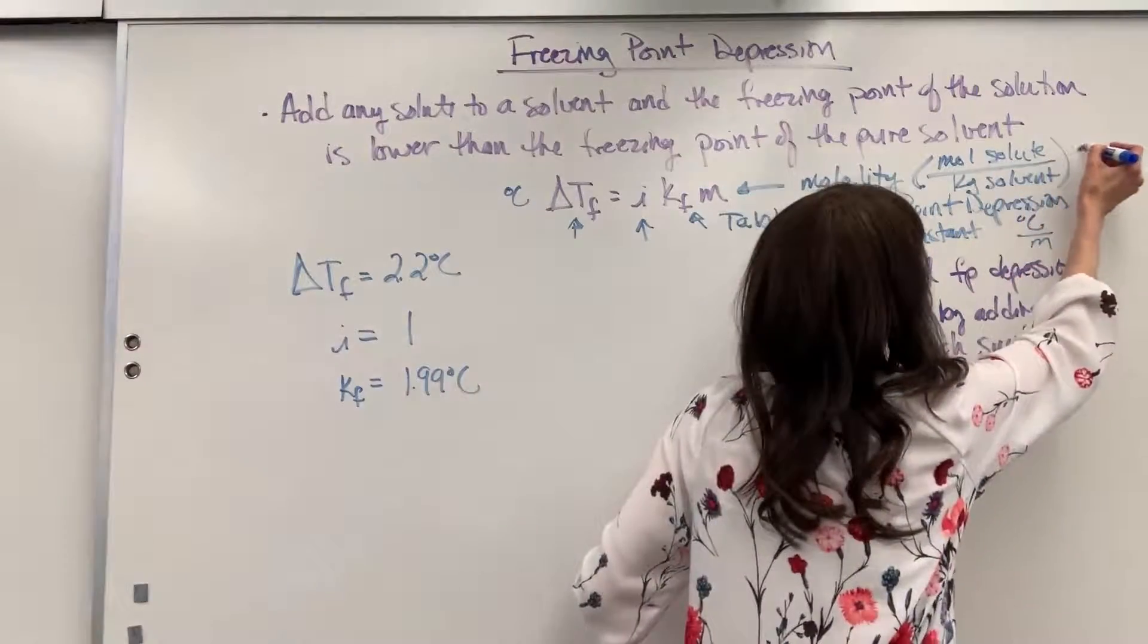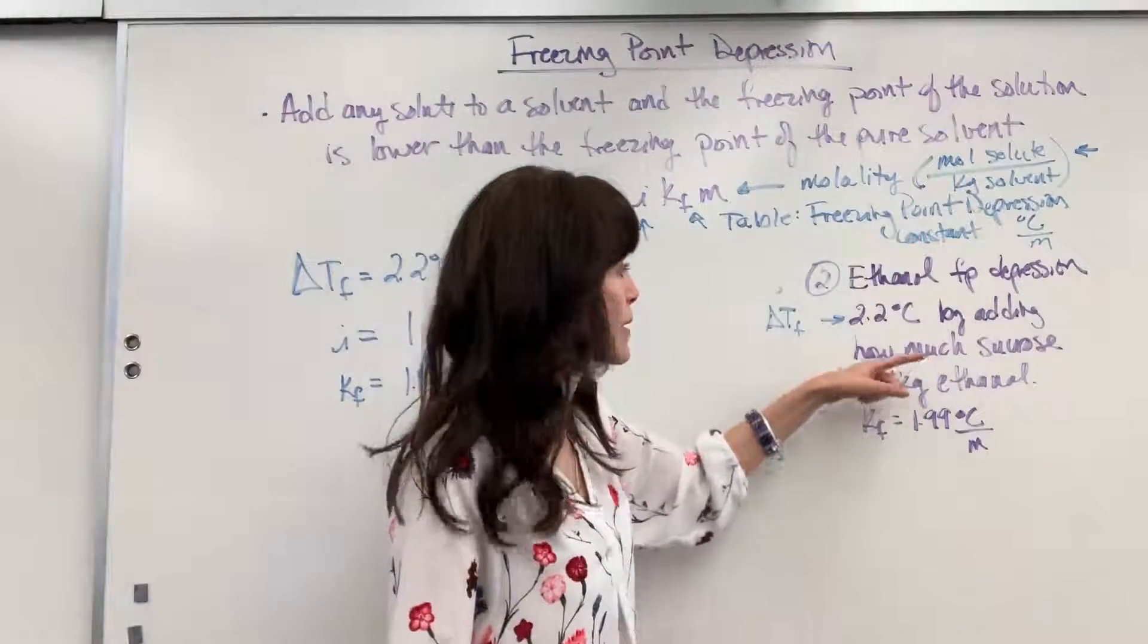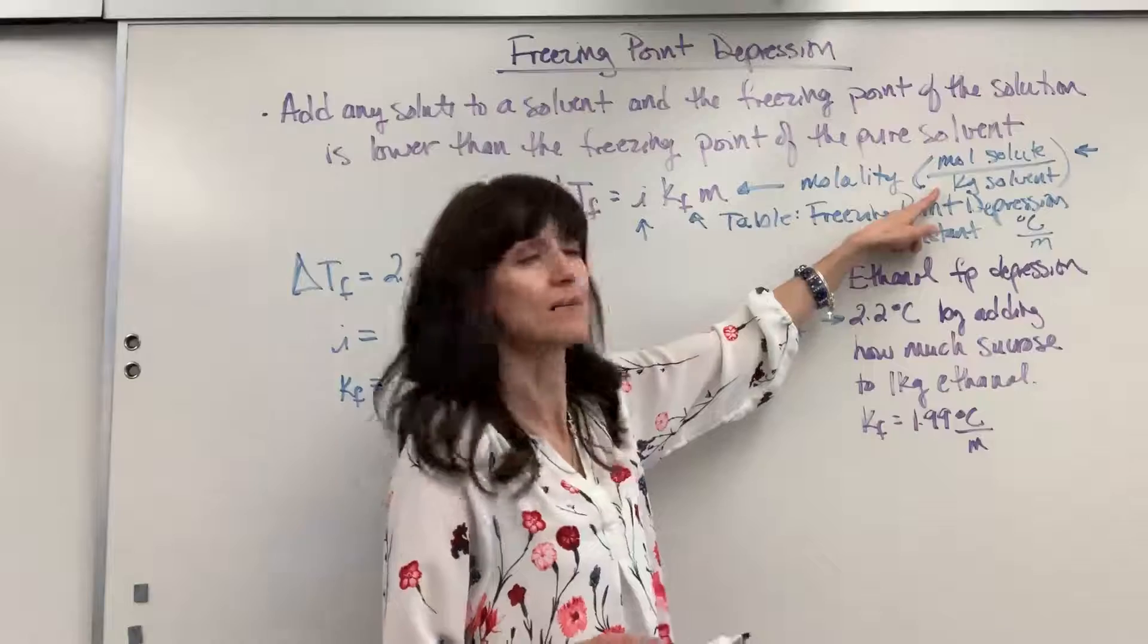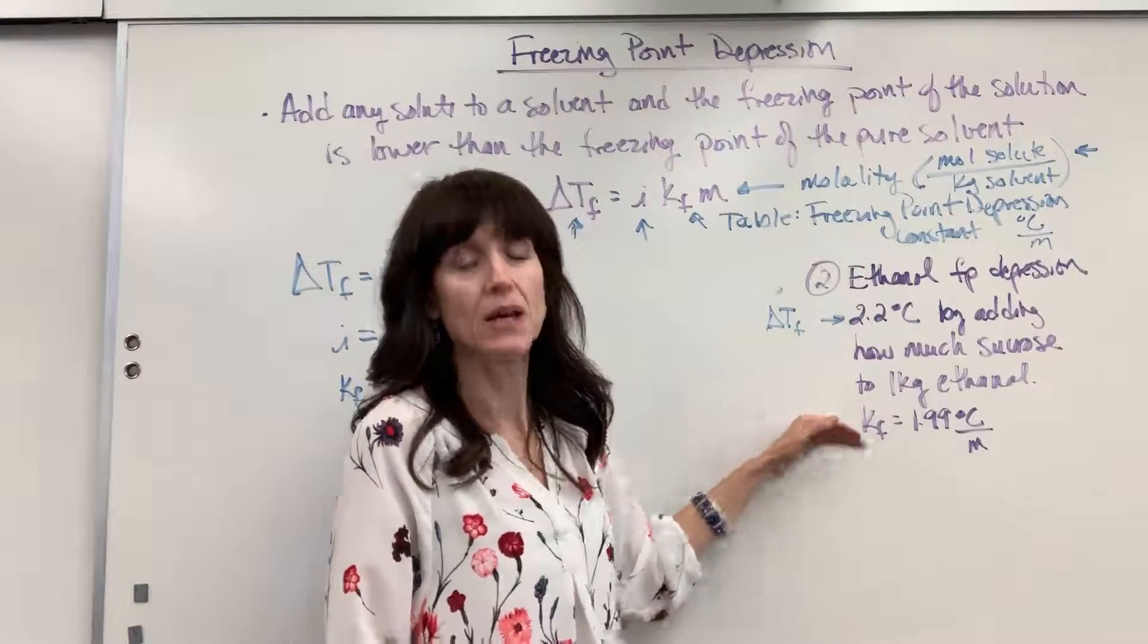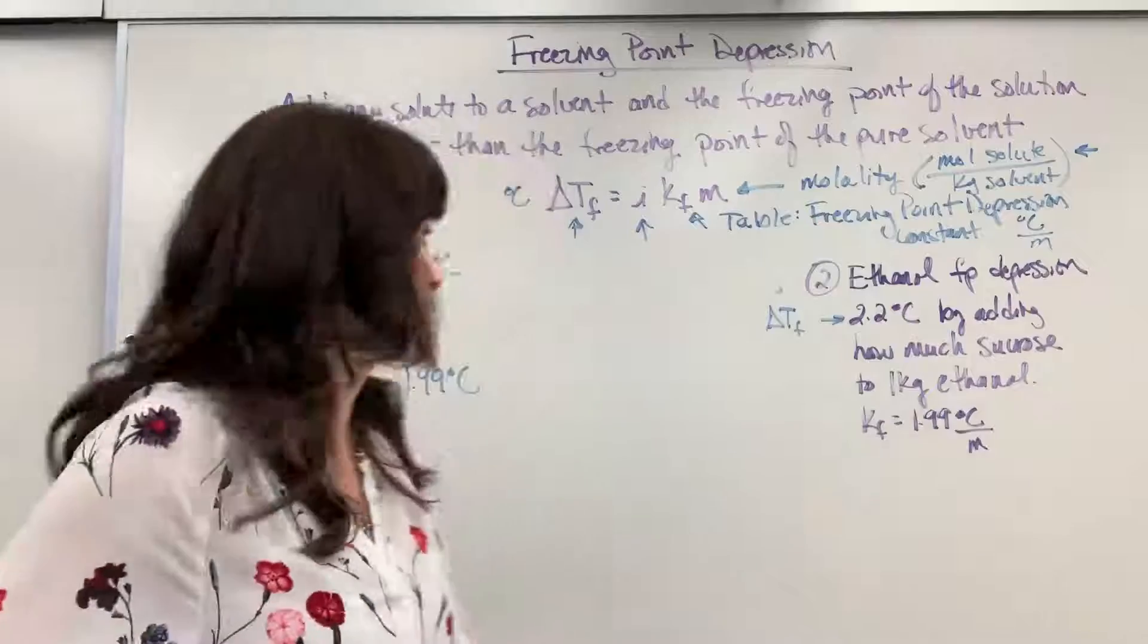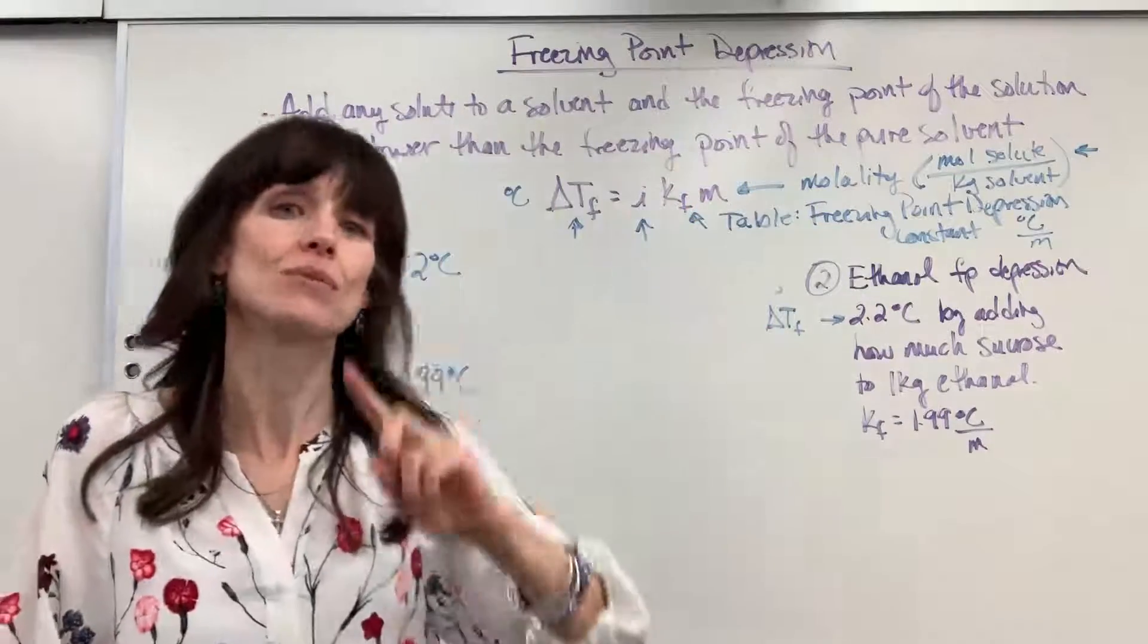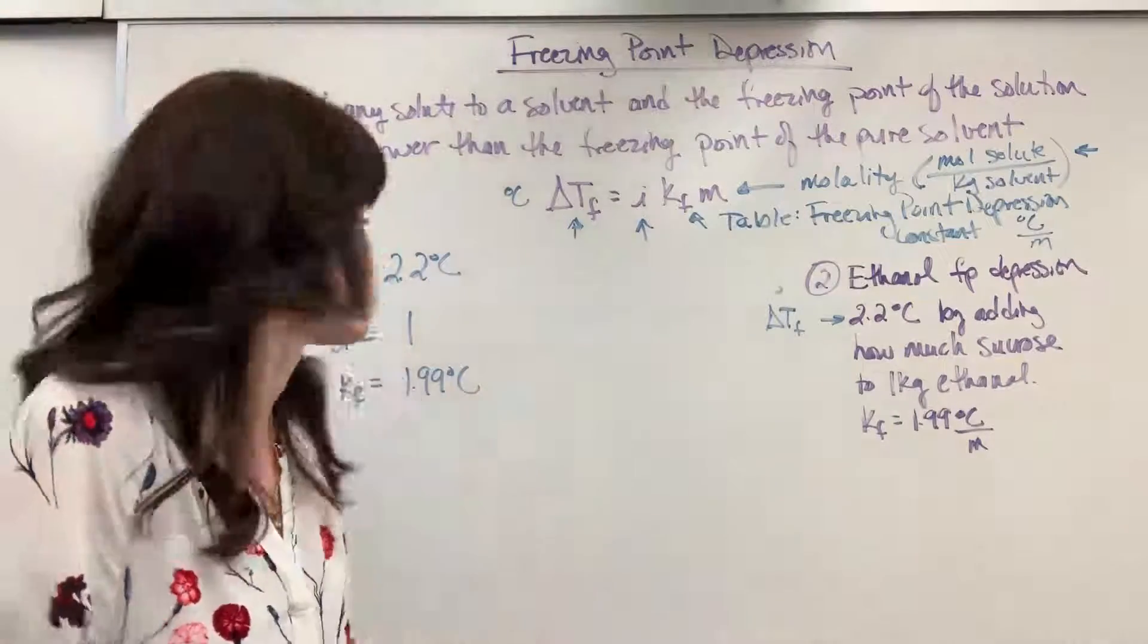Now let's look at molality one more time. Molality is moles of solute, and that's what we want to know, amount of sucrose, and kilograms of solvent. Well, they gave us the kilograms of solvent. So this is what I'm going to do. I'm going to solve for M, get the molality, and then I'll use the molality to find the amount of the solute. So M will be my unknown.